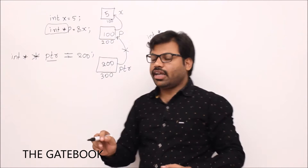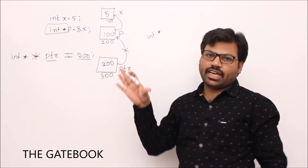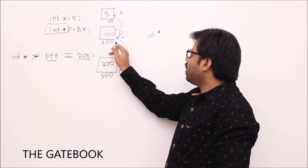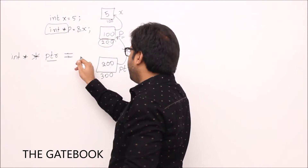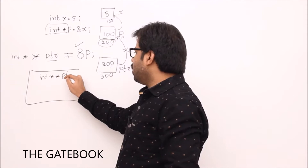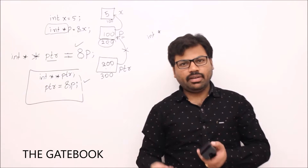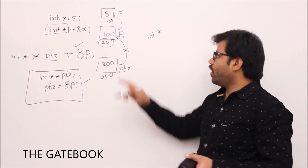Remember, in programming we can't explicitly mention memory addresses — you don't know them either. That's why it is just logical imagination. With respect to variables, 200 is nothing but the address of p. That's why simply erase it and write address of p. Either you can do it in one step, or in two steps: one is create the variable separately like int double star ptr, and the second step is ptr equal to address of p — that means content of ptr equals address of p.